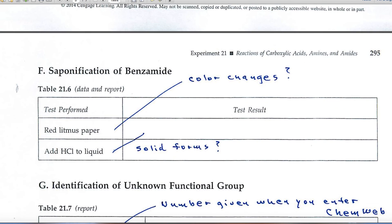Part F deals with the saponification of benzamide. And again, you're testing with red litmus paper, so you'll look for color changes. You'll see if a blue color forms or not. And in the second part of that, you're adding HCL to the liquid. Does a solid form? That's the question.